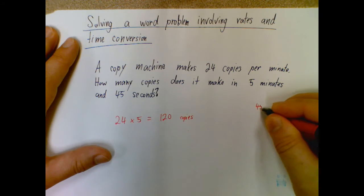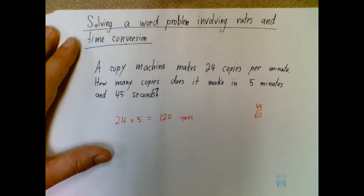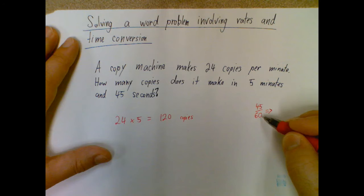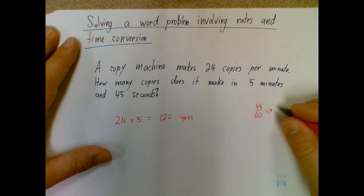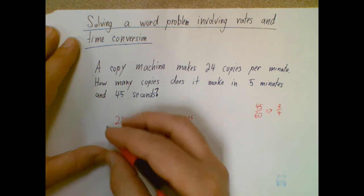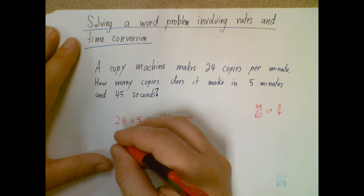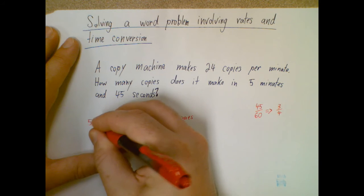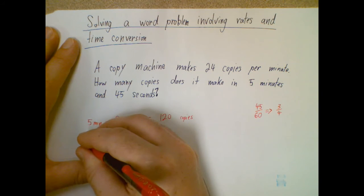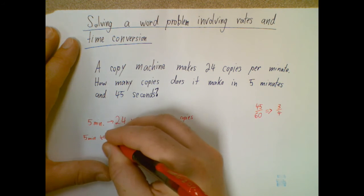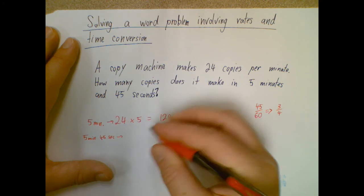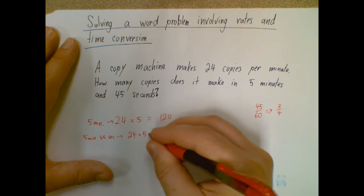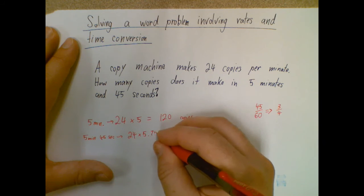So instead of 45 over a hundred, it's 45 over 60. So to get my decimal, I need to take that and reduce it as much as I can. And you can end up dividing each of those or reducing them by 15. And you find out that this is actually the same as 3 fourths. So for this specific problem, if this is five minutes, five minutes and 45 seconds would be 24 times 5.75, where three fourths is 0.75.